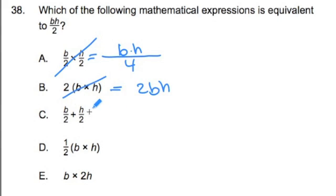If I did this one out, adding these two, this would actually look like this. It would be b plus h divided by 2. And that's not the same, because this one right here is saying that we're multiplying the b and h. So I crossed that one off.